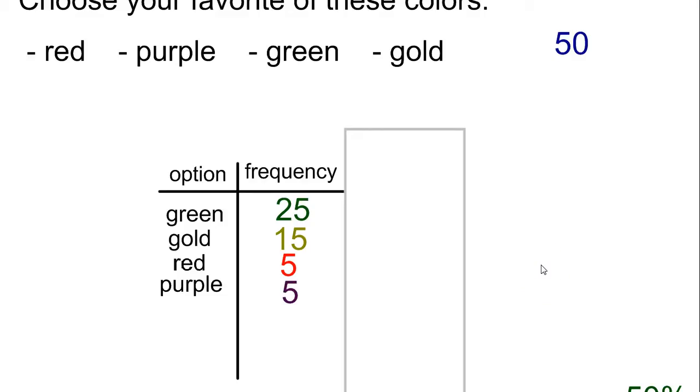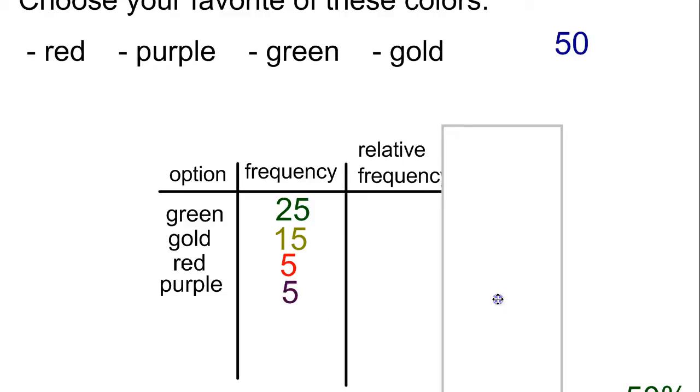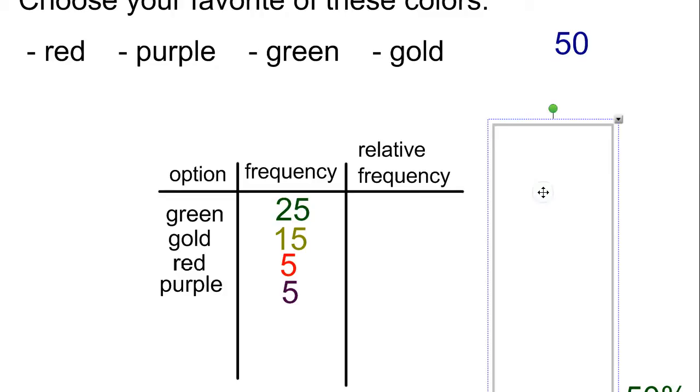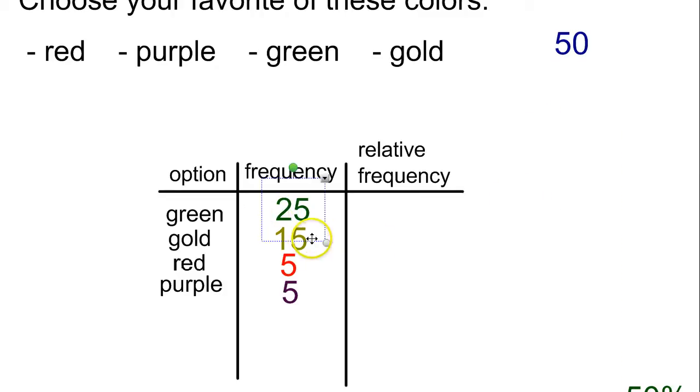Now the problem with frequency charts is that you don't necessarily know, unless you add it all up, how many people in total there were. Sometimes you might put a total column at the bottom to make that a little bit easier, but even more commonly you'll see something called relative frequency. The relative frequency is how often something comes up compared to the total. So in the case of green, the relative frequency would not just be 25, but it would be 25 out of 50, because there were 50 total people that took the survey. And 25 out of 50 is going to be .5, or more commonly expressed as 50%.